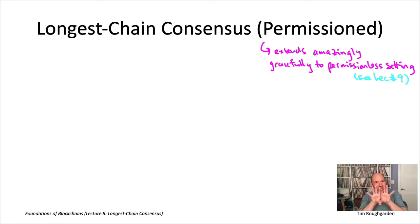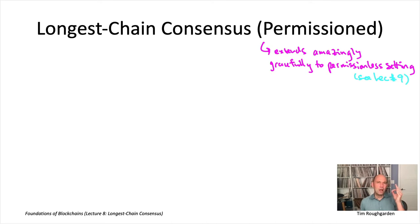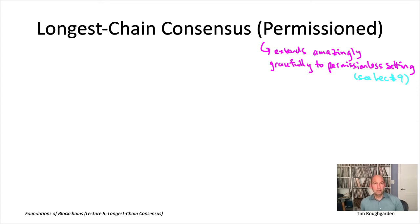I'll be able to keep them mostly separate, but they inevitably interact a little at their edges. There will be one point in this lecture, and I'll be explicit when we get to it, where the description of longest chain consensus and what an adversary might do to manipulate it will be influenced by the fact that in the next lecture, we'll be selecting block proposers using a proof of work solution.